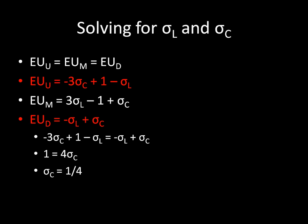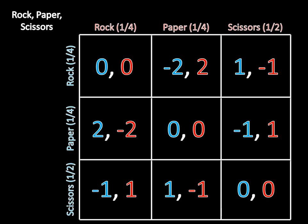This is going to be the exact same thing for player one — I'm going to leave that to you to do on your own. But once you've done that, we have our mixed strategy Nash Equilibrium. Player two plays rock with probability one-fourth, paper with probability one-fourth, and scissors with probability one-half. Player one does the exact same thing: rock with probability one-fourth, paper with probability one-fourth, and scissors with probability one-half.